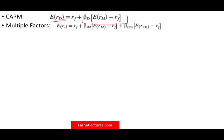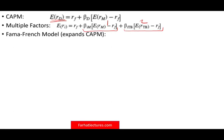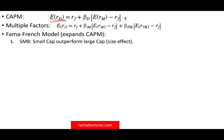Now we can use multiple factors. In the prior session, we saw that instead of just using one beta, we could use the beta for the market and the beta for the treasury bond — a two-factor model. Here come Fama and French, the two authors — Eugene Fama and Kenneth French. They expanded on CAPM and said there might be other factors that affect expected return. They found two main factors to add: small minus big (SMB), representing small cap outperforming large cap — the size effect — and high minus low (HML), the value factor.